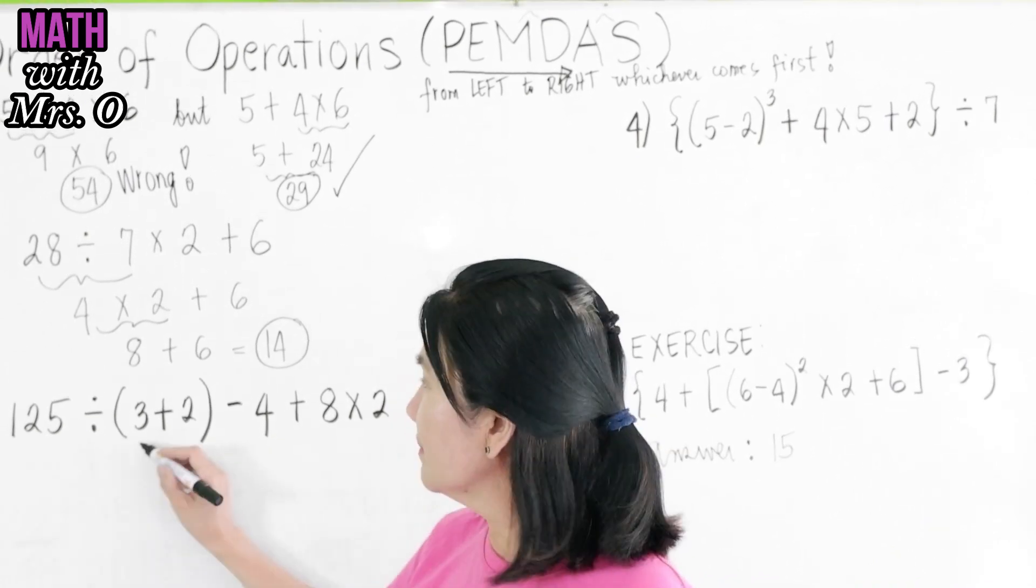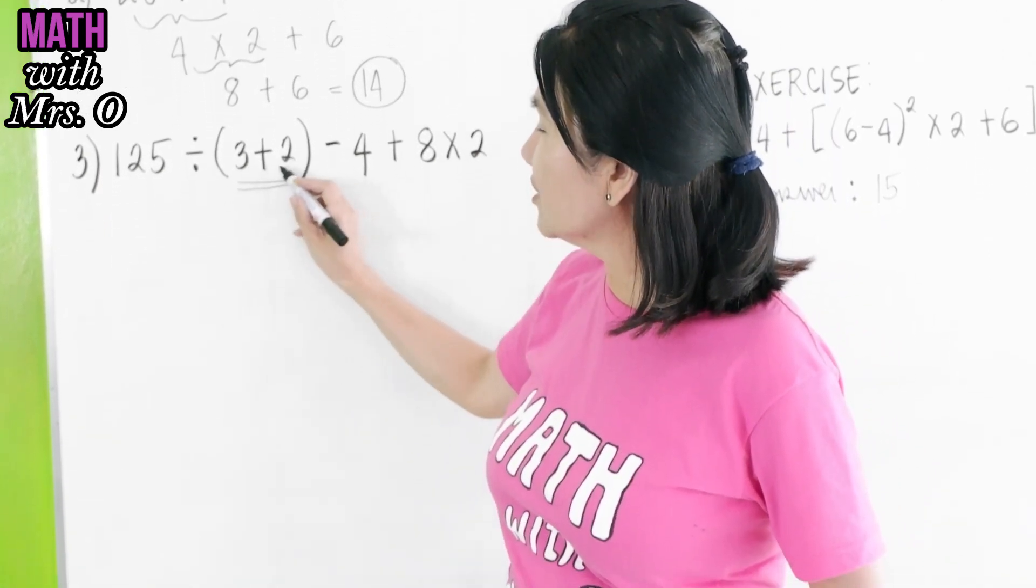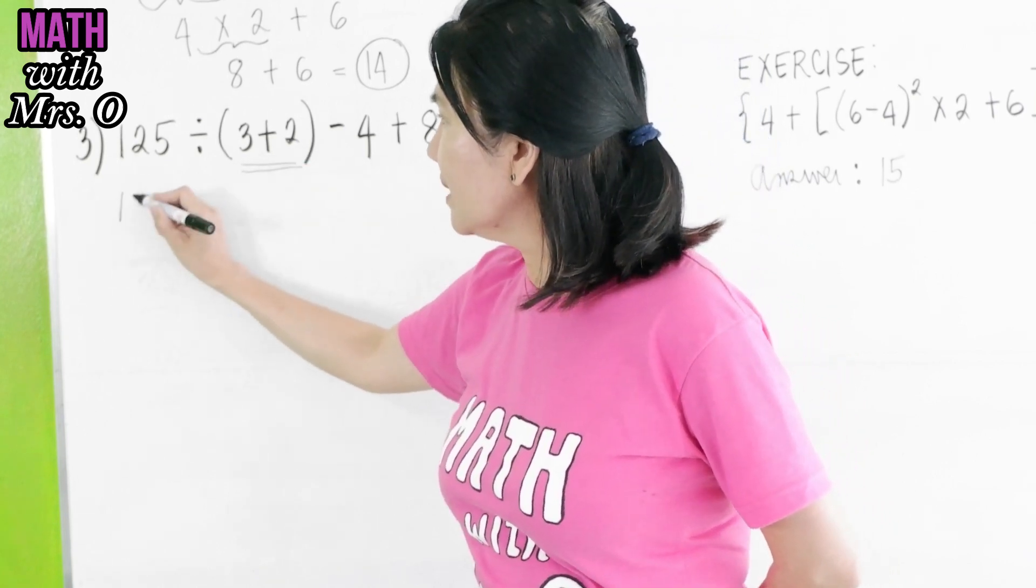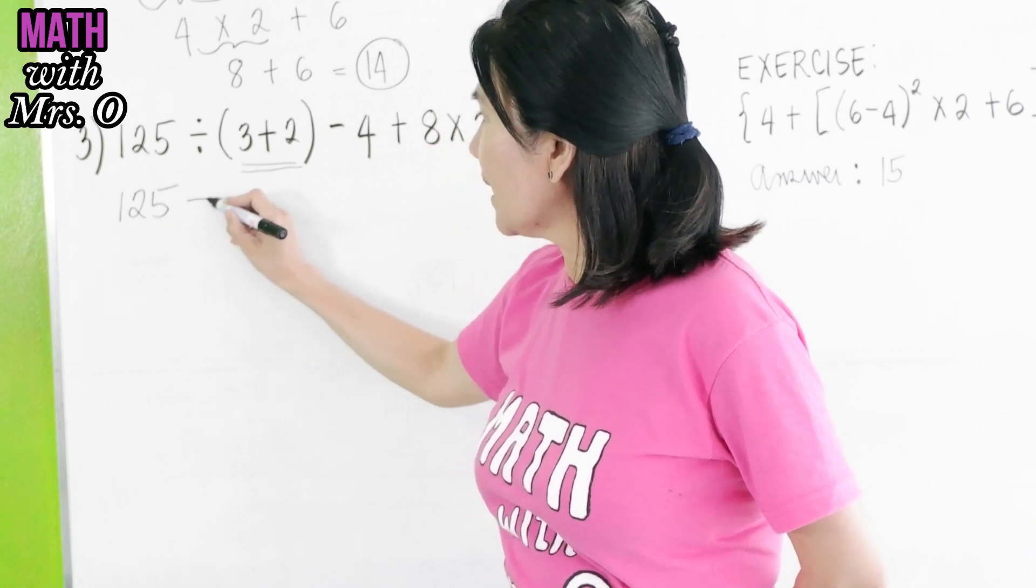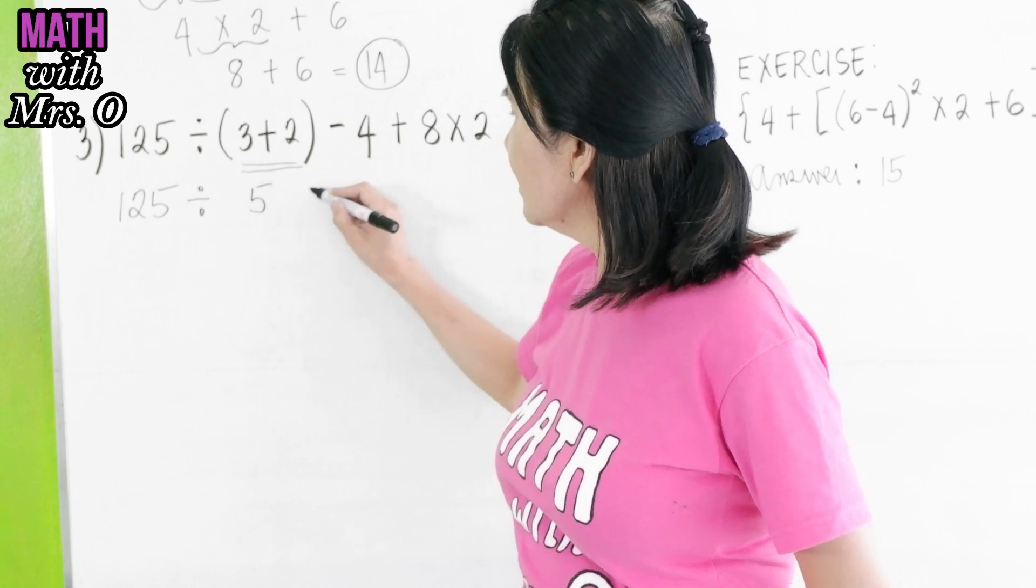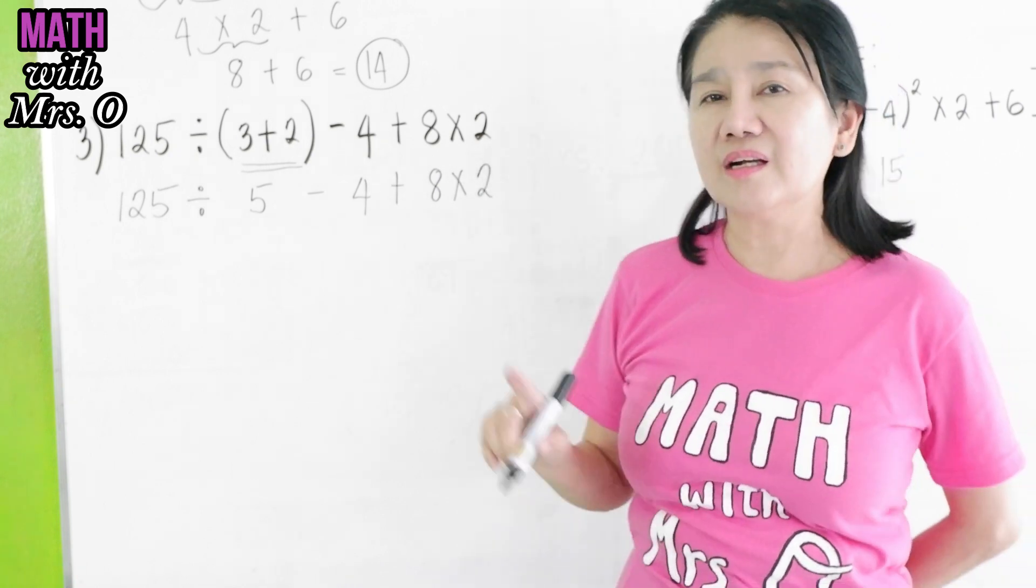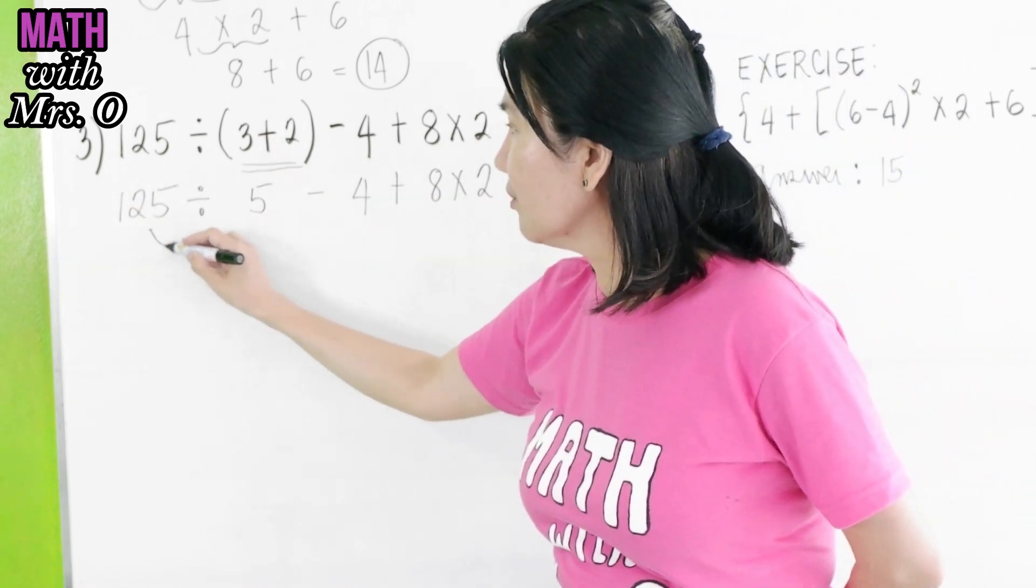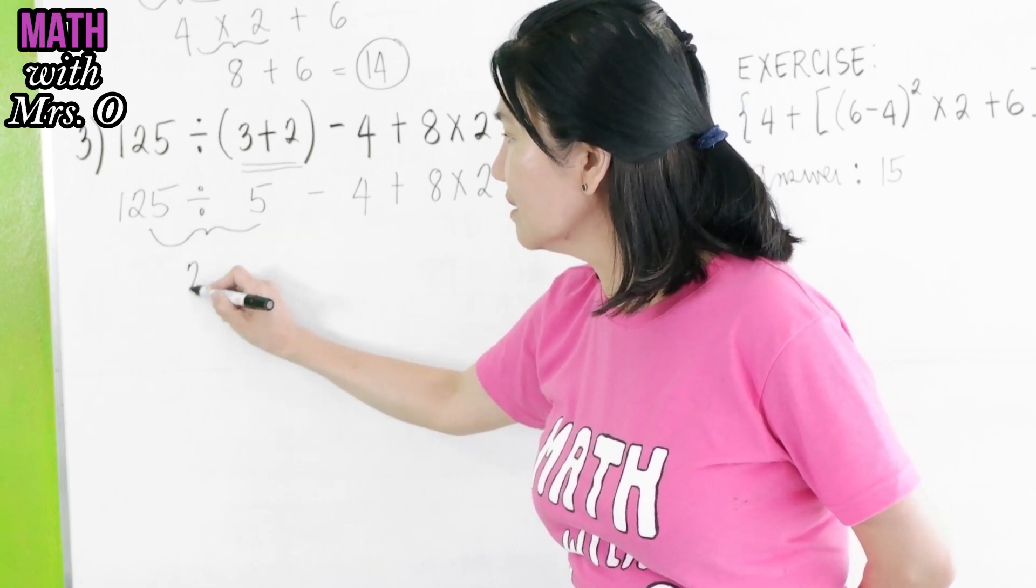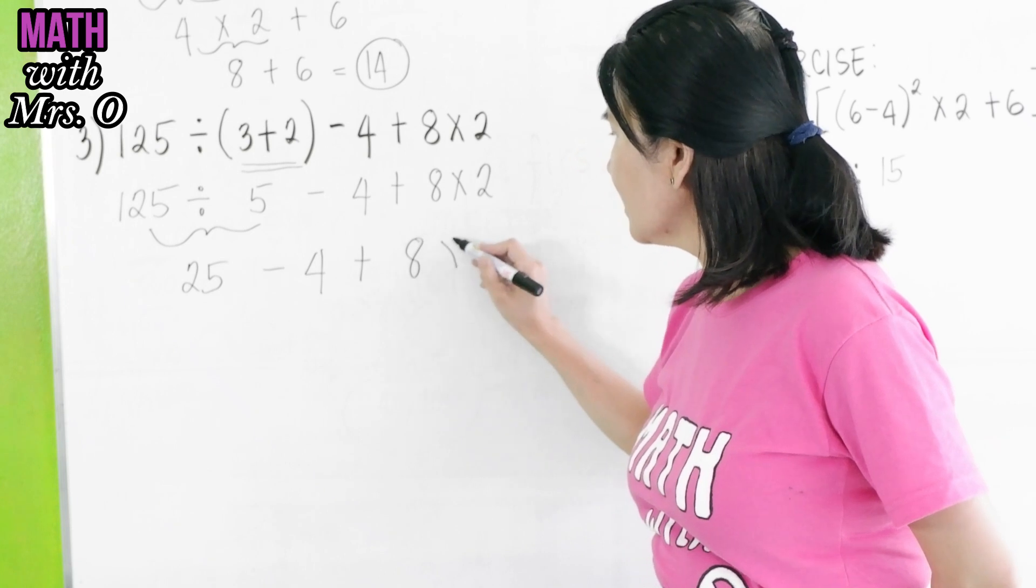Now, in number three, you see here that there is a grouping. So, we have to simplify this first, the ones inside the grouping. We copy 125 ÷ (3 + 2 is 5) - 4 + 8 × 2. From left to right, we do the division. So, 125 ÷ 5 is 25 - 4 + 8 × 2.